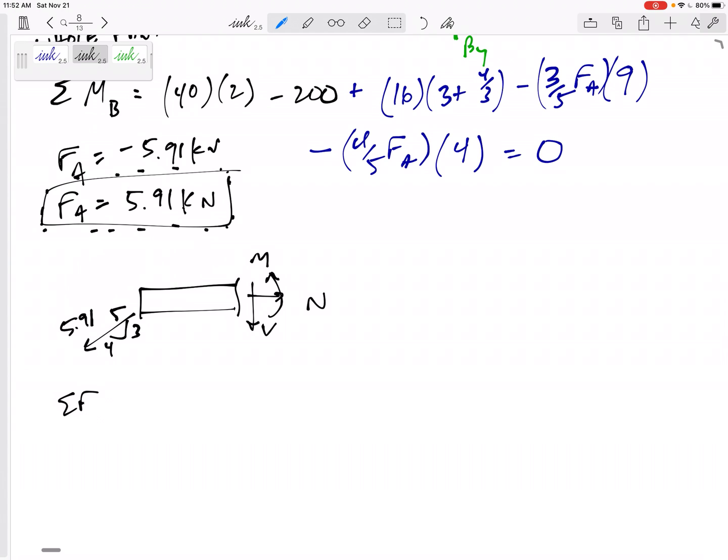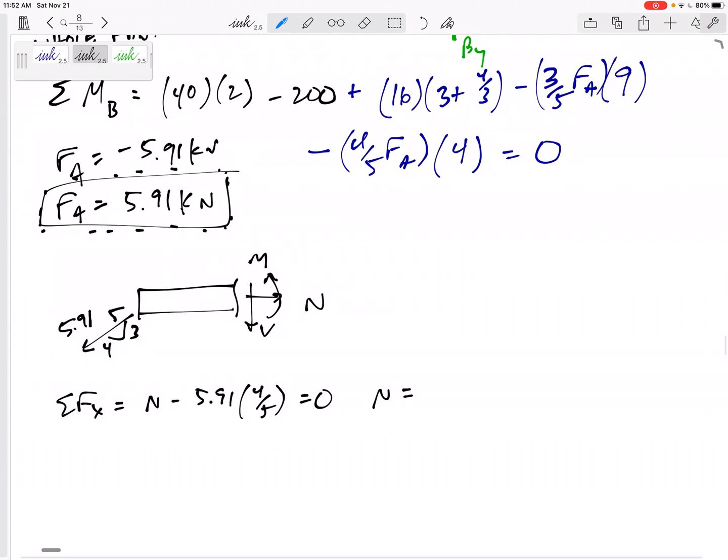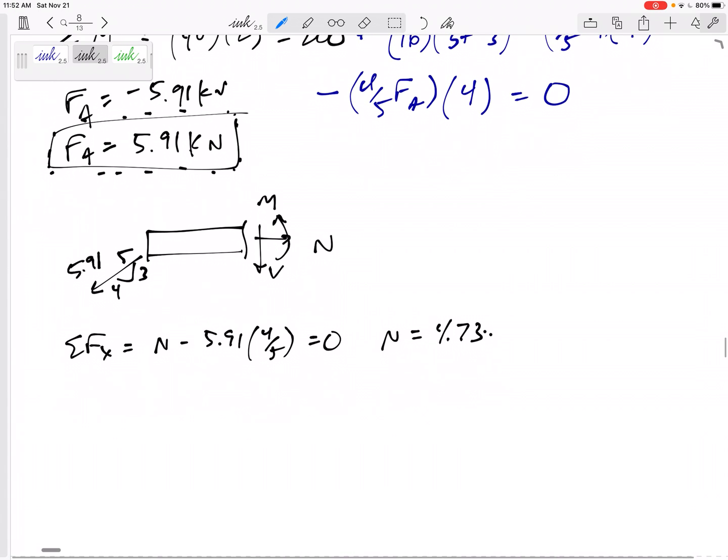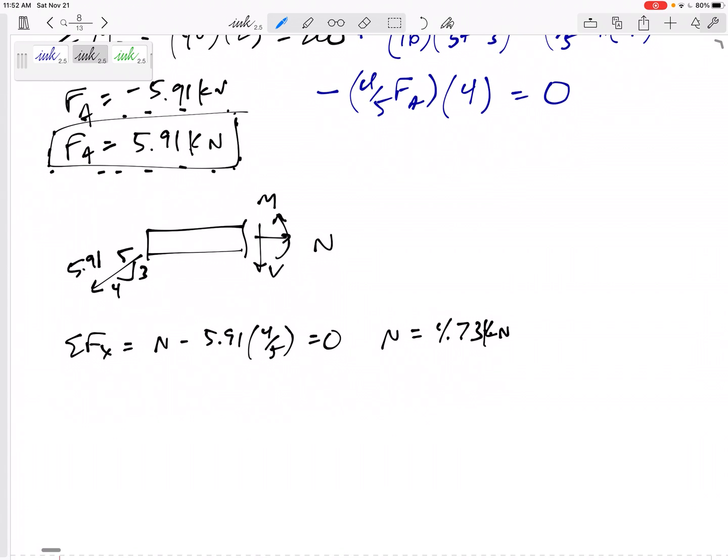Alright. So now, summing the forces in the x direction. N minus 5.91, the four-fifths component equals zero. So N is positive 4.73. I need units here. My units were kilonewtons. Came out positive. That's fine. Leave it positive.